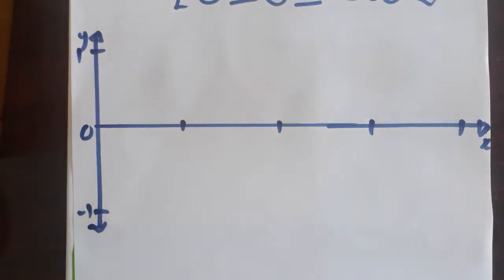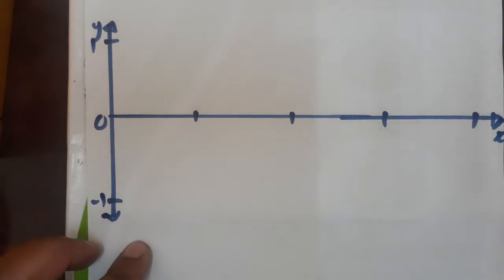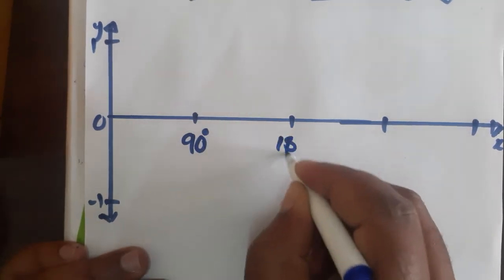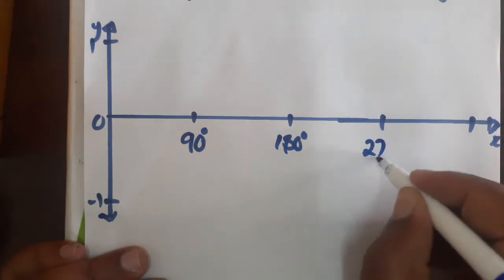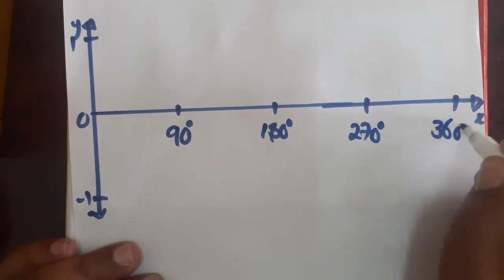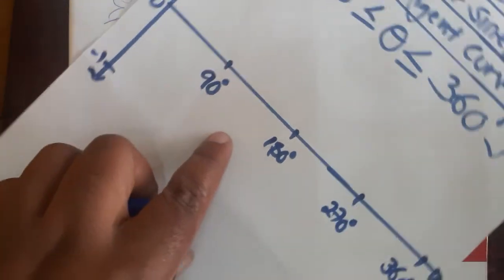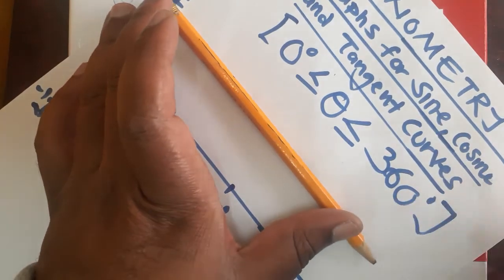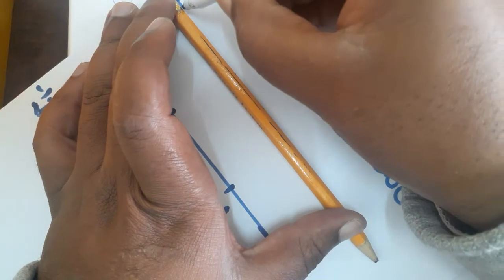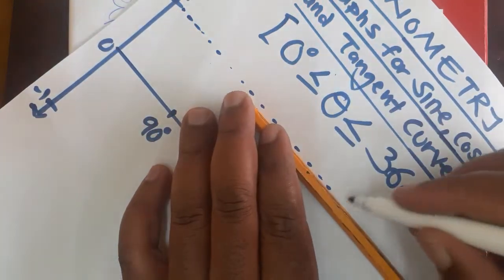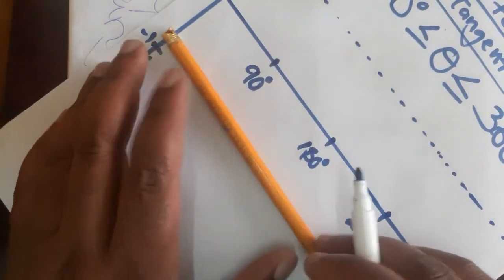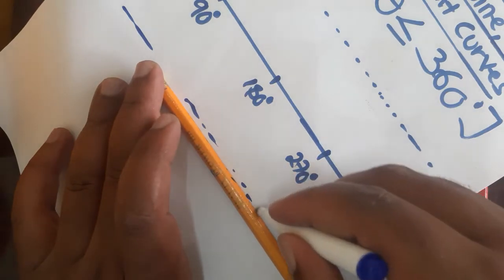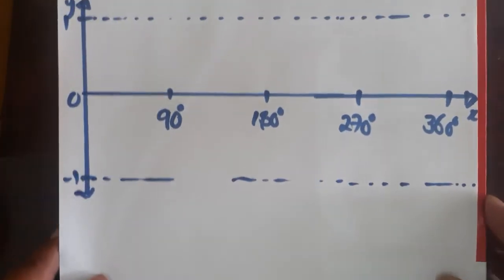So the first thing to do — before we start plotting — we indicate the angles: 90 degrees, 180 degrees, 270 degrees, and 360 degrees. Let me also put some lines to help with the graph.